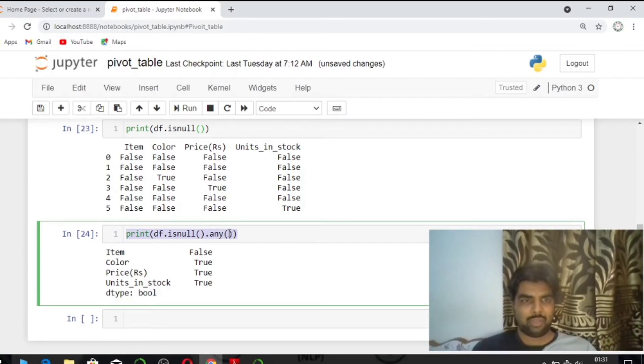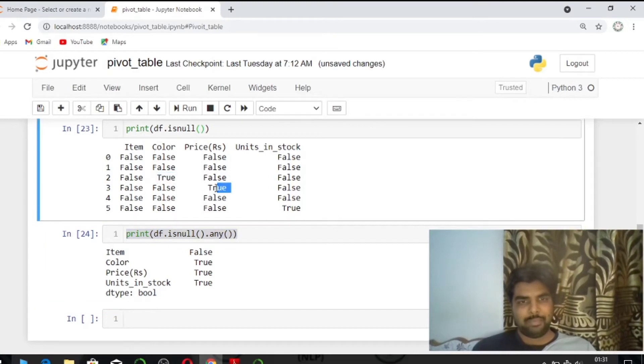So in item column, there's 1 missing value, in colors column 1 missing value, in price 1 missing value and in unit 1 missing value.